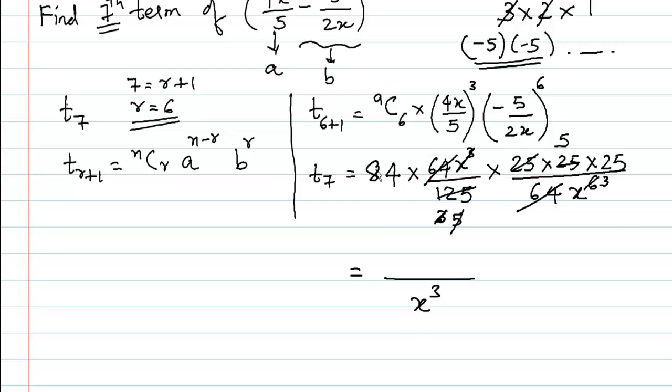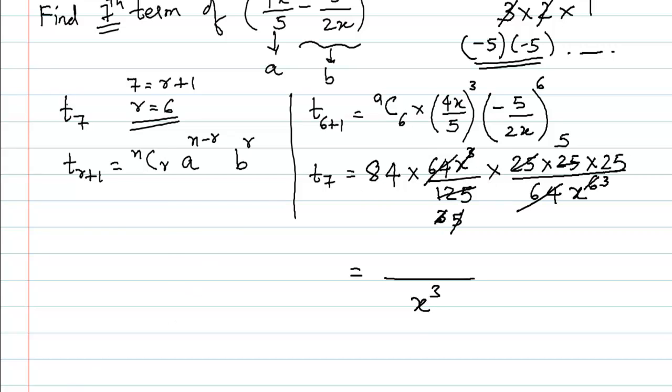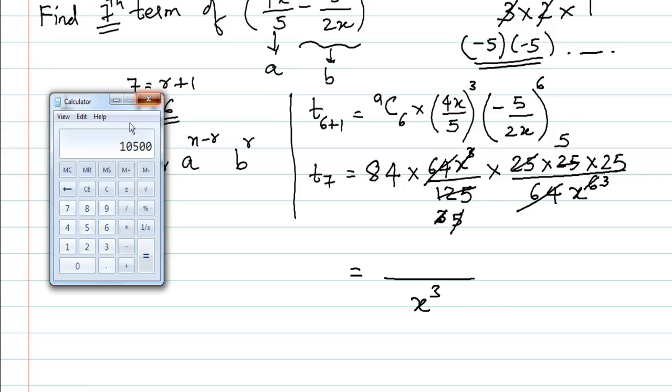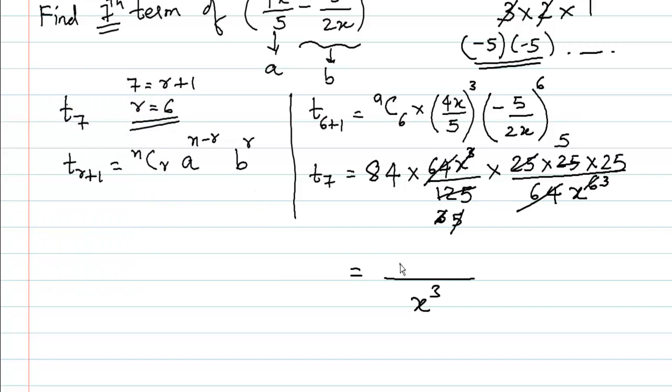In the numerator we have 84 × 5 × 25, which equals 10,500. So the 7th term of this particular expansion is 10,500/x^3.